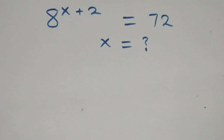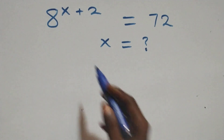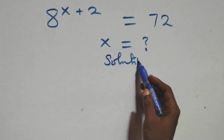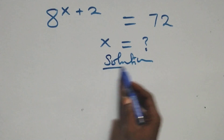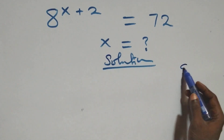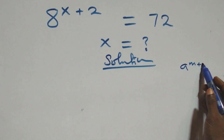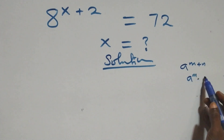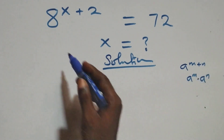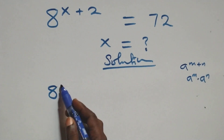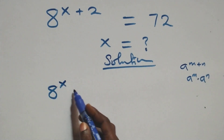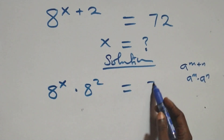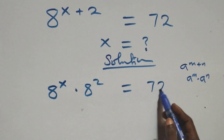Hello, you are welcome. We are going to solve a nice exponential equation. What we have here is 8 raised to the power x plus n, which is the same thing as 8 raised to power x times 8 raised to power n. This becomes 8 raised to power x times 8 squared, which equals 72 on this side.